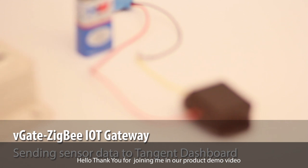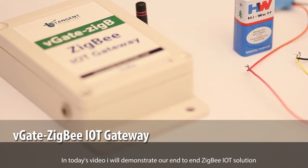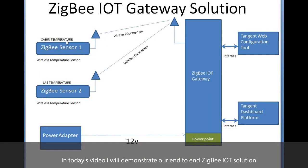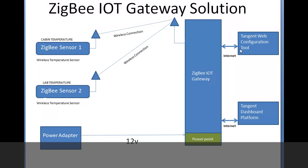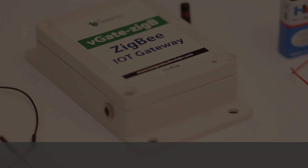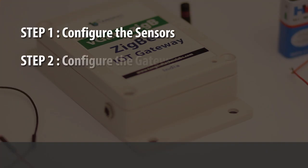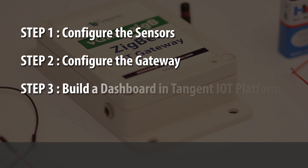Hello, thank you for joining me in our product demo video. In today's video, I will demonstrate our end-to-end ZigBee IoT solution. I would like to build an application to measure temperature values at two different places in our office and display them on a dashboard in the cloud. This can be achieved in three simple steps: Step 1 is to configure the sensors, Step 2 is to configure the gateway, and Step 3 is to build a dashboard in our Tangent IoT platform.